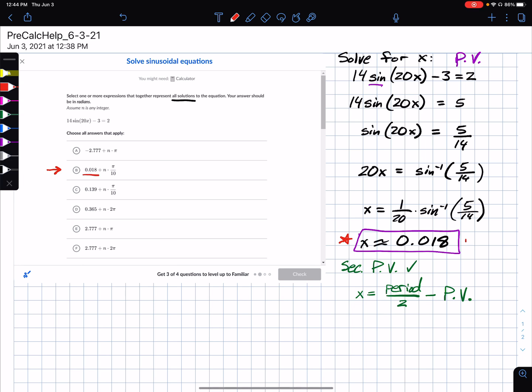But the skip counter, n times the period, is something we need to find both for that first solution based on the principal value, but also for this second solution based on the secondary principal value.